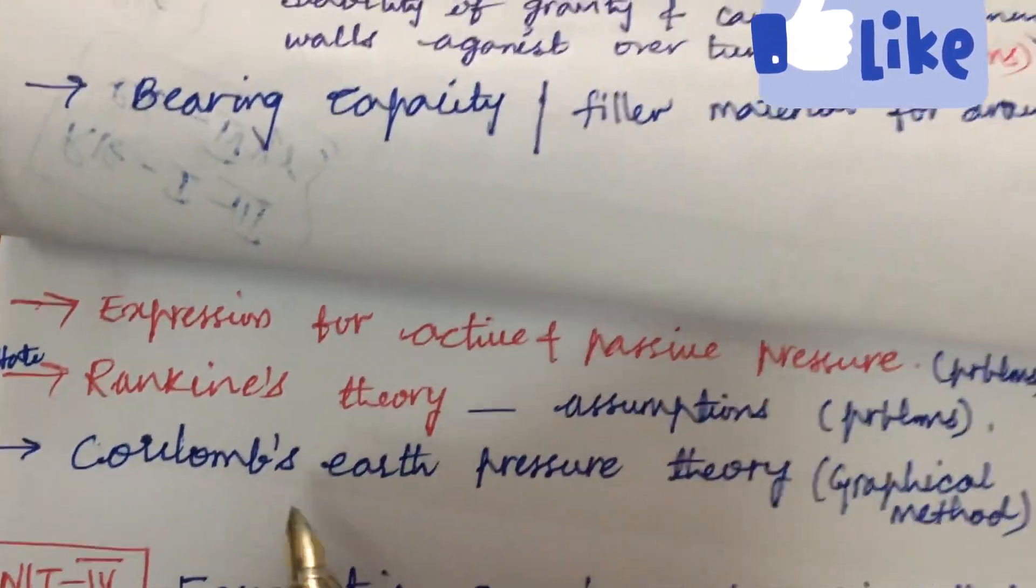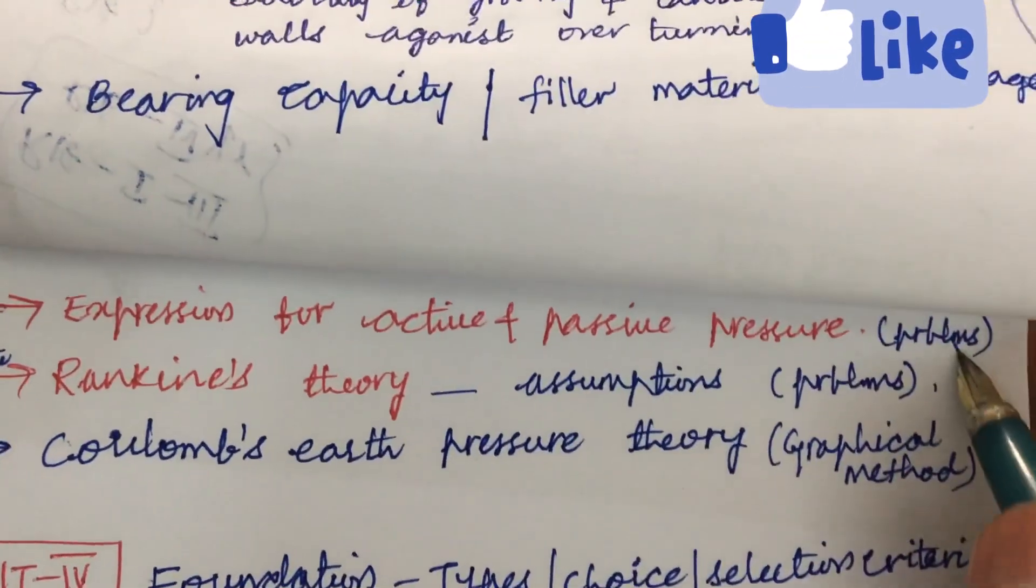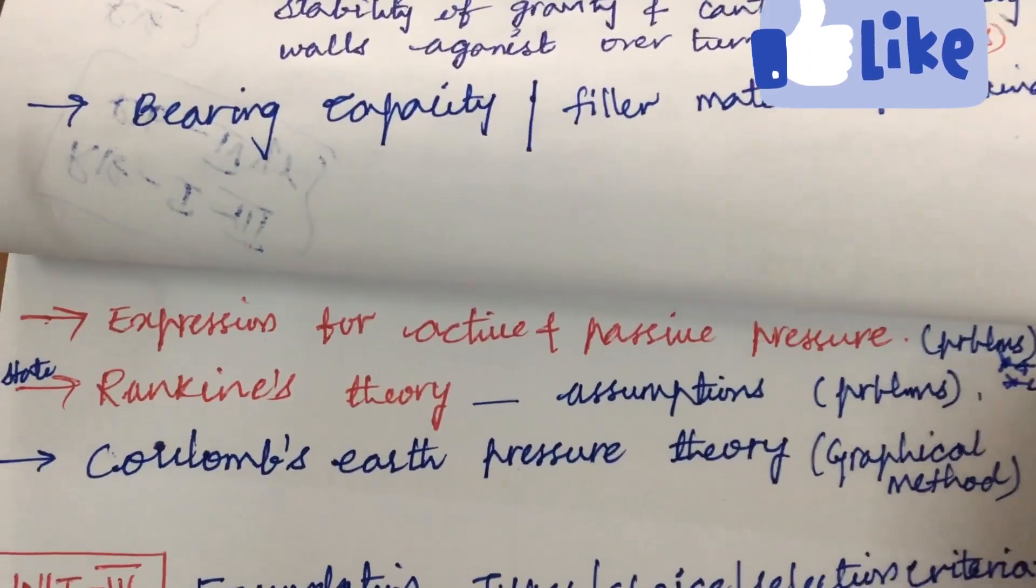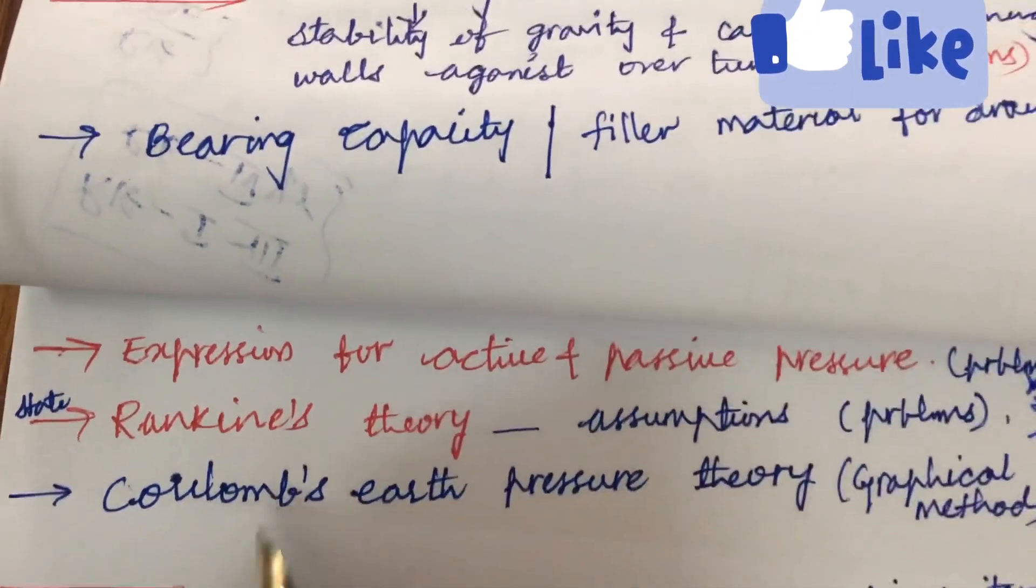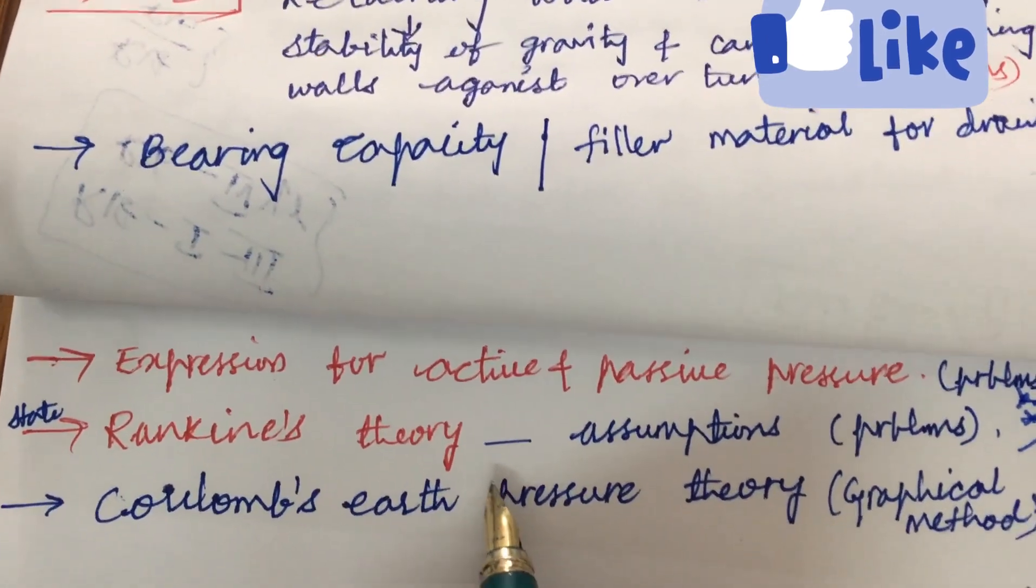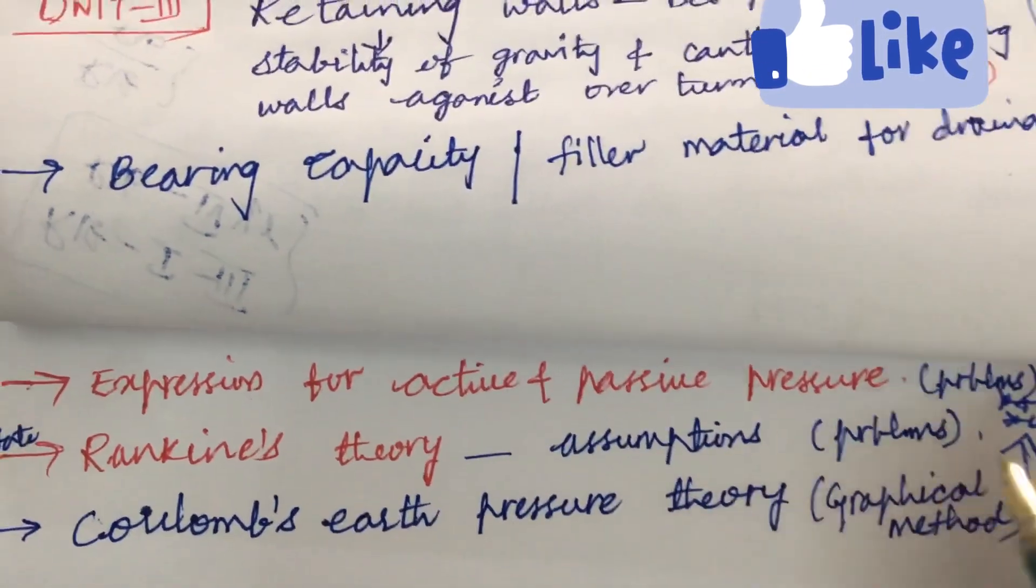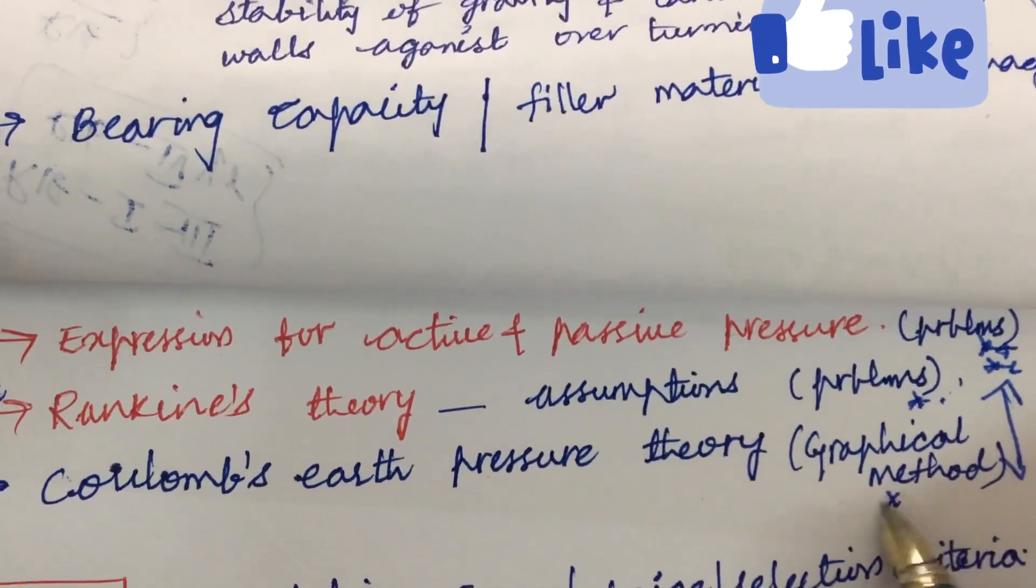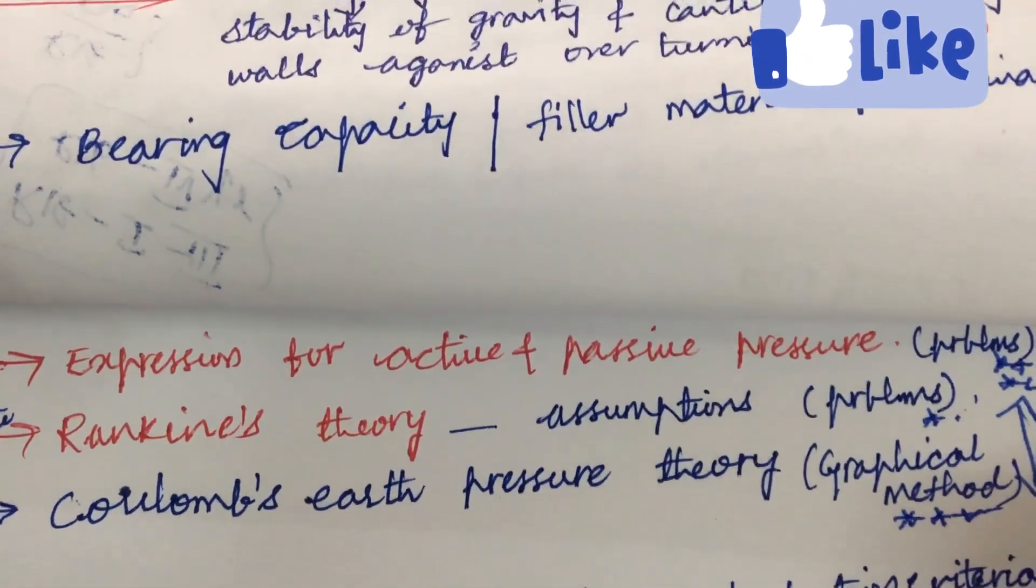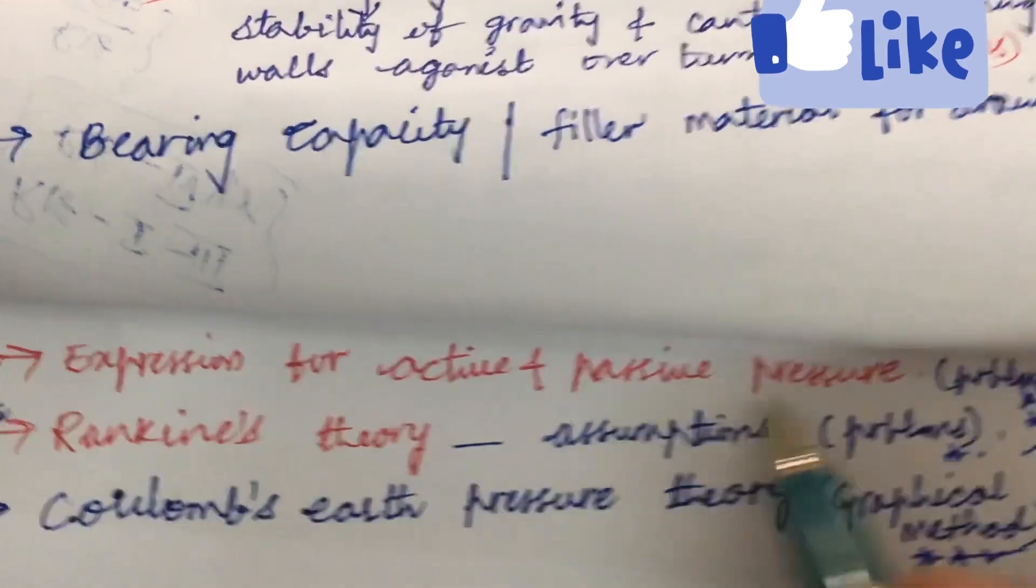Later, next expression for the active and passive pressure and the problems related to it is one of the gunshot questions, as well as we have two more very important concepts related to Rankine's theory - state it and write down its assumptions and the problems related to it - as well as Coulomb's earth pressure theory using graphical method. They may be asking you to derive an expression as well as the problems related to this.